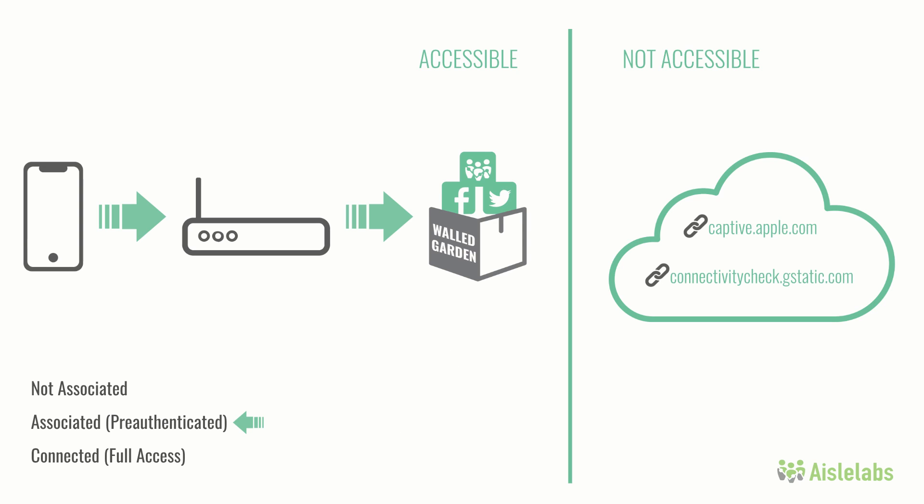Since gstatic.com or captive.apple.com are not included in the walled garden, when the phone associates to the Wi-Fi, it is not able to confirm unrestricted connection to the internet. Hence, the captive portal browser is triggered. When the phone tries to connect to any website which is not part of the walled garden, the AP redirects the request to a pre-configured splash page since the webpage wants additional authorization or permissions. In iLabs Connect's case, that requires a connection to a social media account, email address, or phone number.